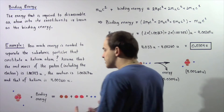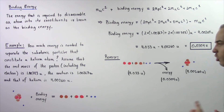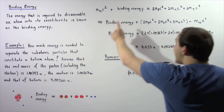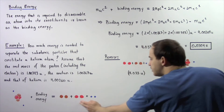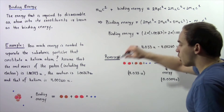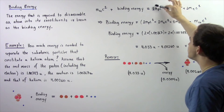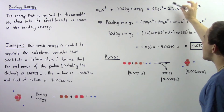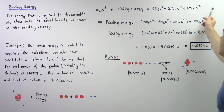Let's take this illustration and transform it into an equation. The rest mass energy of the helium plus the binding energy is equal to the rest mass energy of all these particles — two protons, two electrons, and two neutrons. So: two multiplied by the rest mass of our proton, plus two multiplied by the rest mass of our neutron, plus two multiplied by the rest mass of our electron.